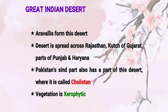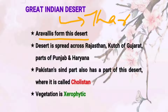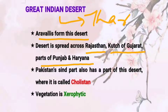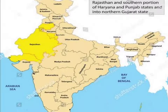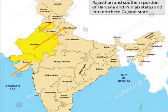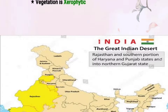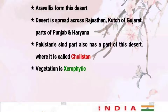The Aravallis form this type of desert — the Thar Desert, the Great Indian Desert. The Thar Desert is formed due to the Aravallis present in the northwestern region of India. The desert is spread across Rajasthan, parts of Gujarat, Punjab, and Haryana. As you can see on the map, the yellow part represents the Thar Desert spread across Gujarat, Rajasthan, Punjab, and parts of Haryana.